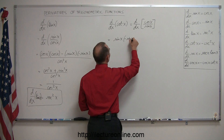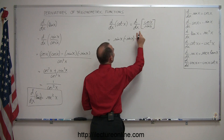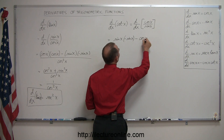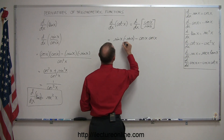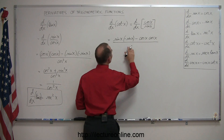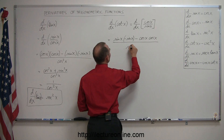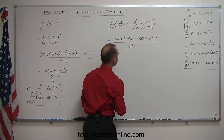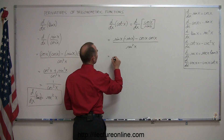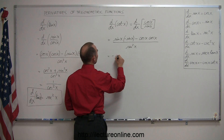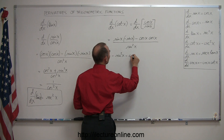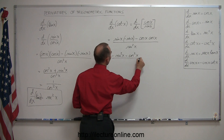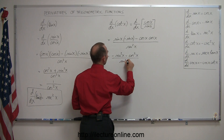Minus the numerator, which is cosine of x, times the derivative of sine of x, which is cosine of x, all divided by the denominator squared, which is sine squared of x. So this is equal to minus sine squared of x — because sine times sine is sine squared — minus cosine squared of x, all divided by sine squared of x.